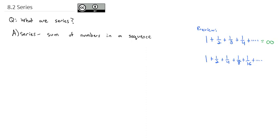While the second sequence, where we have powers of 2 in the denominator — 1/2, 1/4, 1/8, 1/16 — that's going to actually add up to the number 2. So sometimes a series of numbers will add up to infinity, and sometimes a series of numbers will add up to a specific number. That's what you're going to be interested in when you get to calculus.